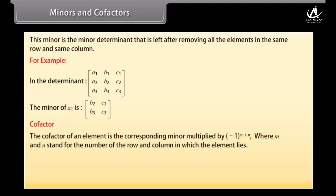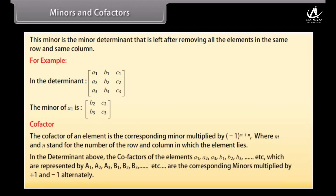Cofactor. The cofactor of an element is the corresponding minor multiplied by (-1)^(m+n), where m and n are the row and column numbers in which the element lies. In a determinant, the cofactors of elements A1, A2, A3, B1, B2, B3 and so on are the corresponding minors multiplied by +1 and -1 alternately.